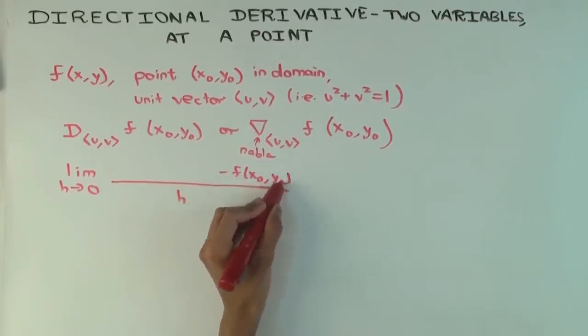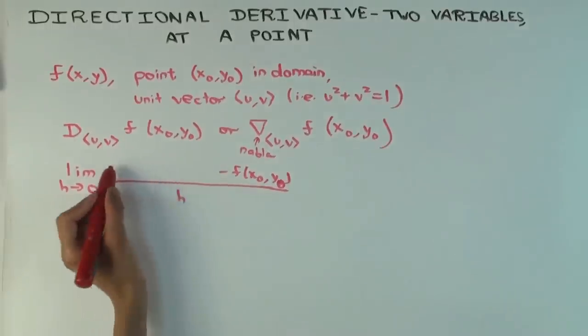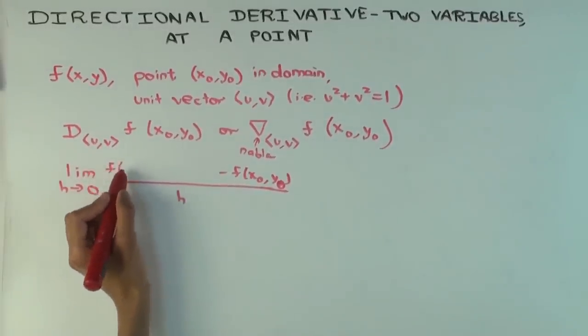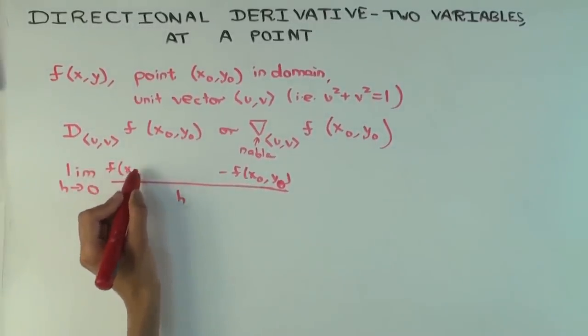So what should be come here? F of x plus h, plus what? Well you're going in the direction of uv. So what should you add here? Plus u times h. Why? No u squared. u times h.